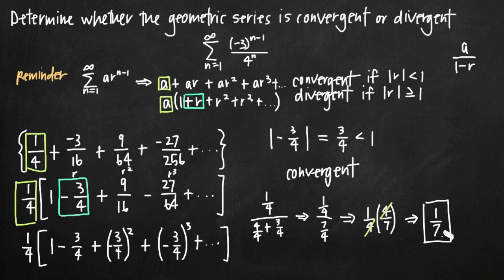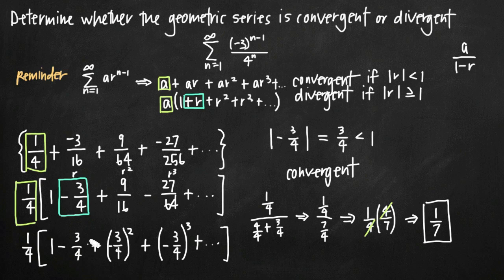So that's how you use the geometric series test to determine whether a geometric series is convergent or divergent. The easiest way is to write down the first few terms and see if you can get it into this form. What makes it a geometric series is the constant multiple r — each term is the previous term multiplied by another factor of r. If you cannot get it into this form, it's not a geometric series.